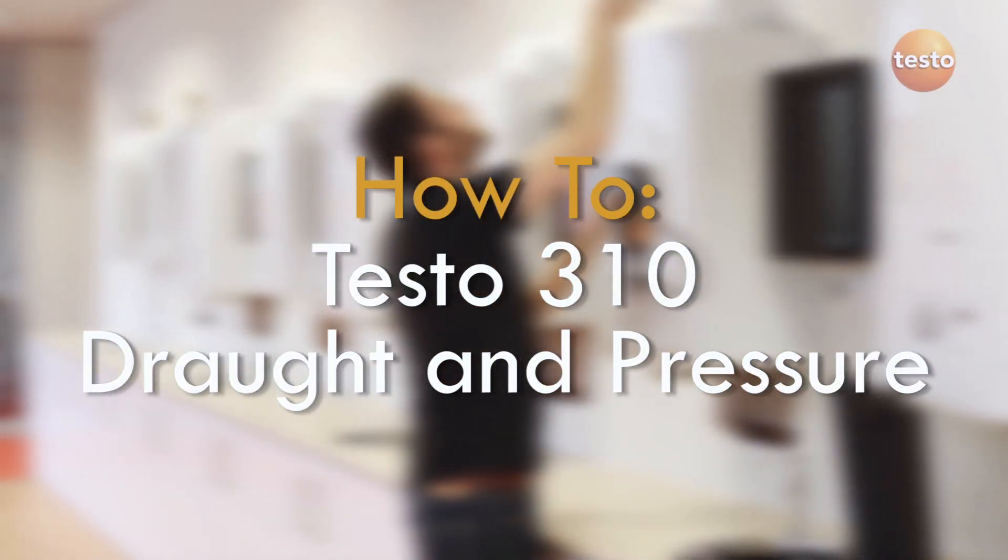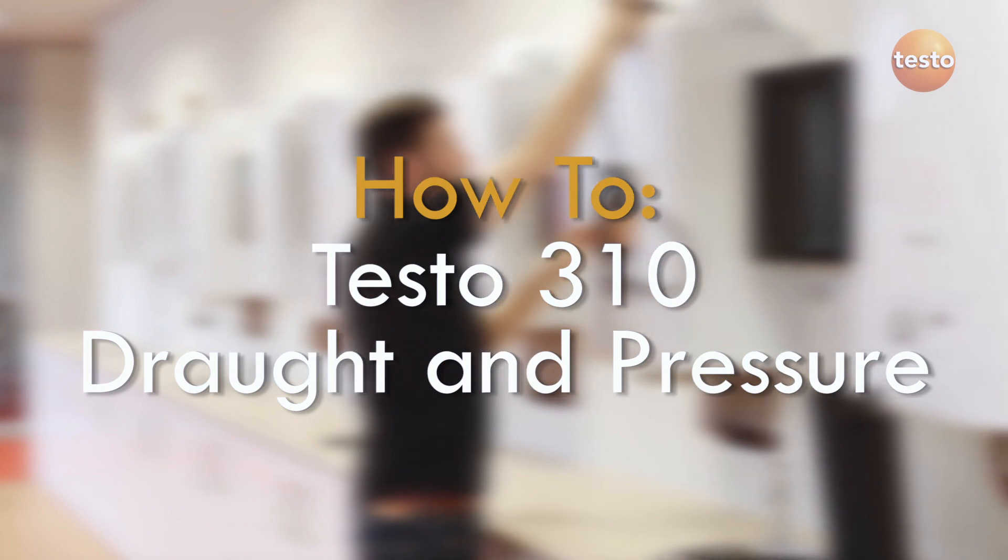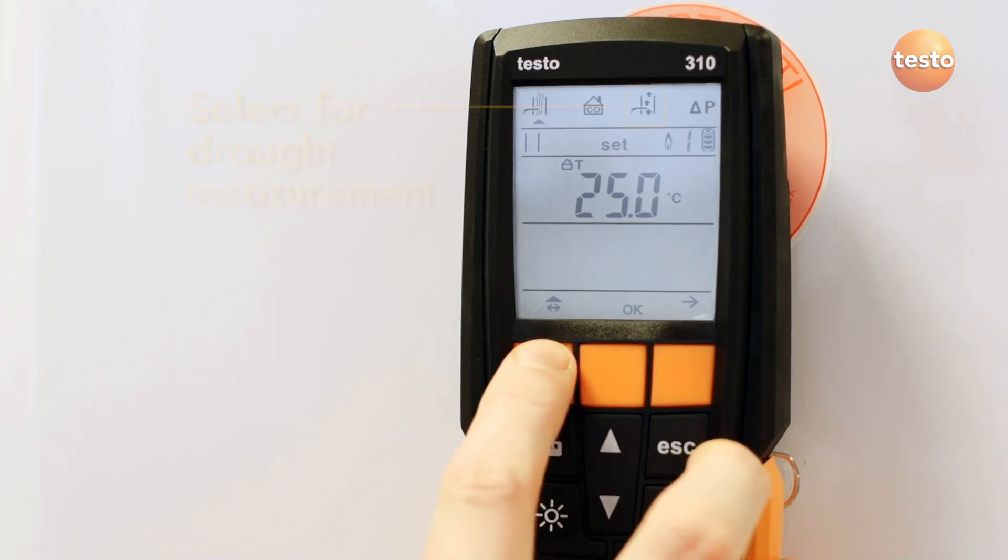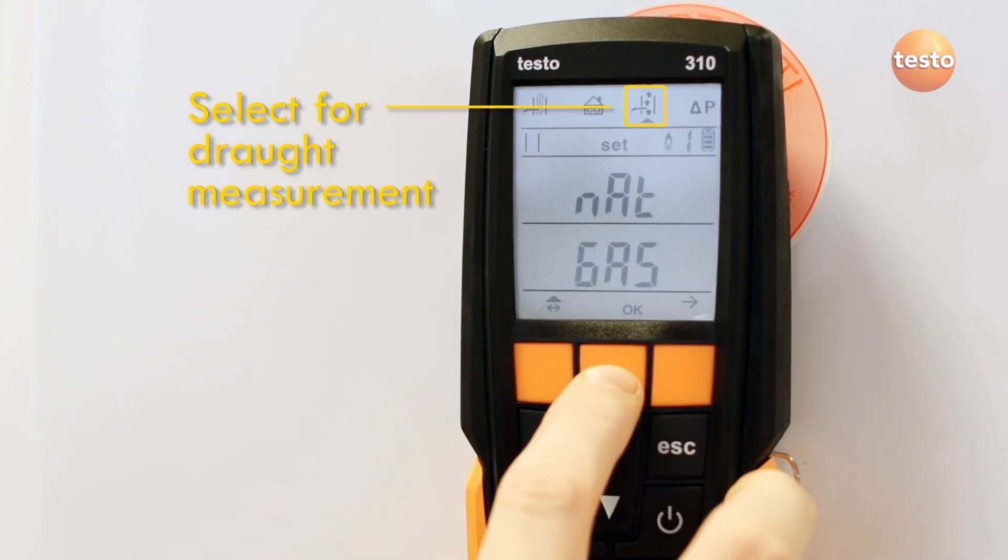The 310 has built-in pressure sensors which mean the analyzer can be used to check the flue draft or to measure gas pressure. To measure draft, select the test on the screen and then with the probe in fresh air.